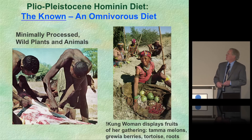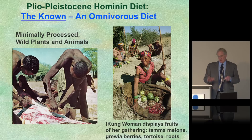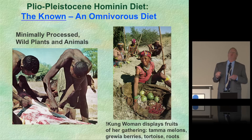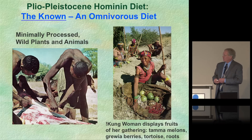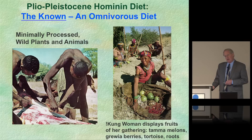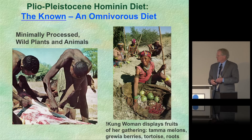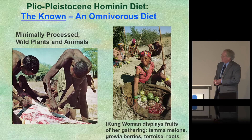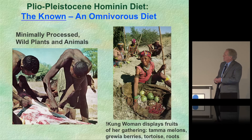Our ancestors ate an omnivorous diet — both plant and animal foods. The difference from ours is that their foods were wild and unprocessed. These photographs were taken by Richard Lee at Harvard of the Kung people in the late 1960s. One fellow has a stone tool in his hand — an experiment showing you could effectively butcher an African animal with stone tools, disarticulating the carcass very efficiently.